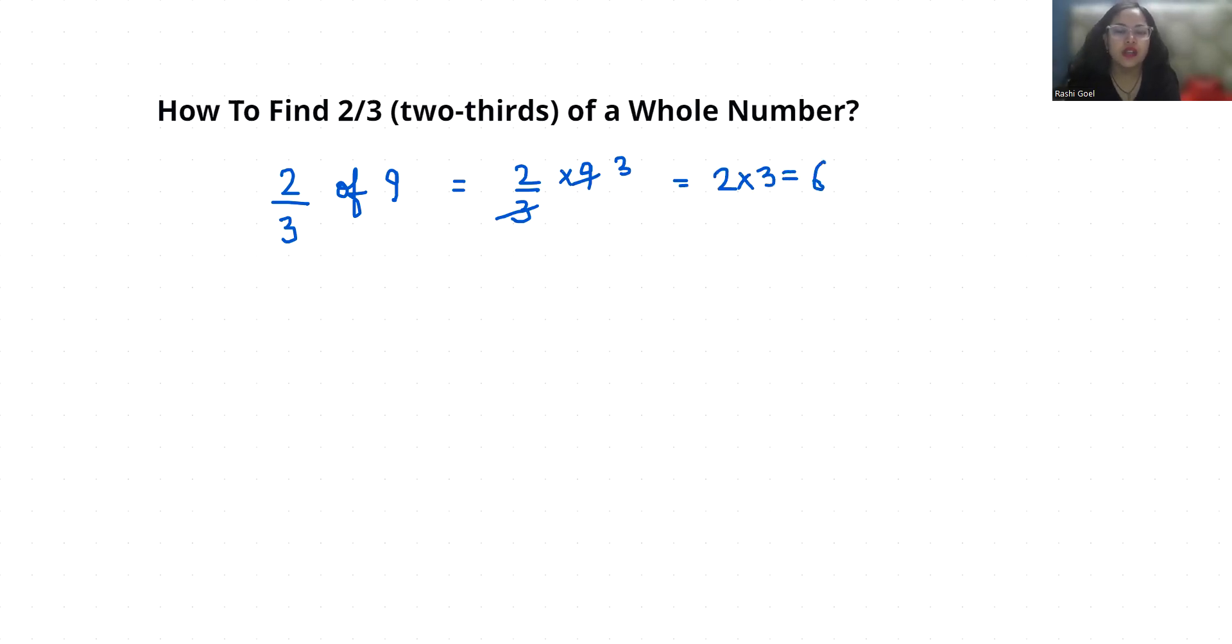So 2/3 of 9 is 6. Now 2 by 3 of another example, suppose 12. So 2 by 3 times 12. So we will cancel out this with 4 times.